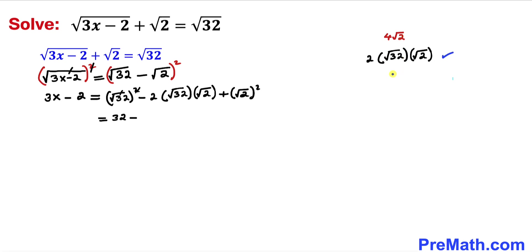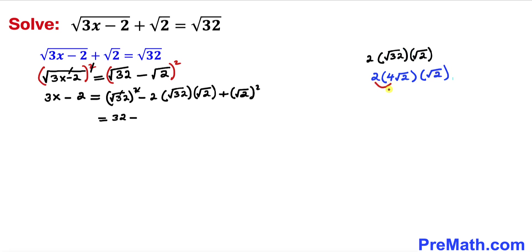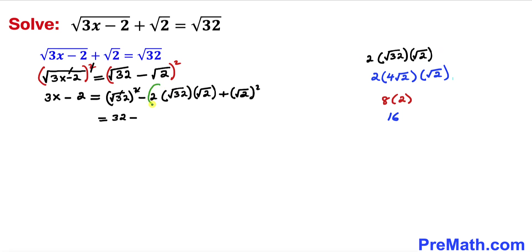So this middle expression can be written as 2 times 4 times square root of 2 times square root of 2. Here 4 times 2 is 8, and square root of 2 times square root of 2 gives us 2. So 8 times 2 turns out to be 16. Therefore this whole expression simplifies to 16.